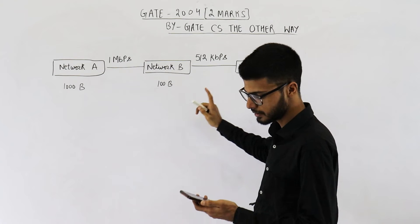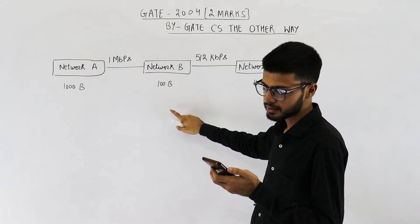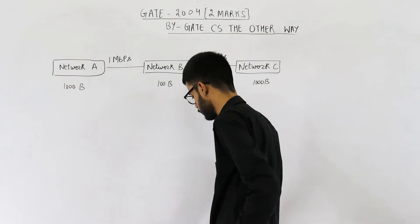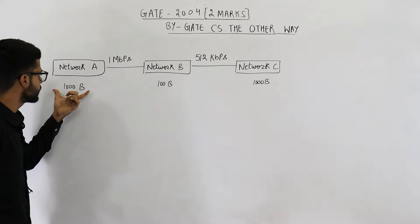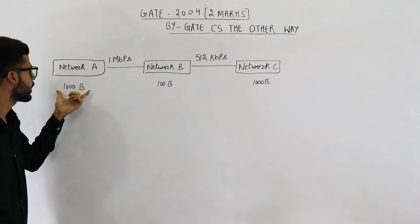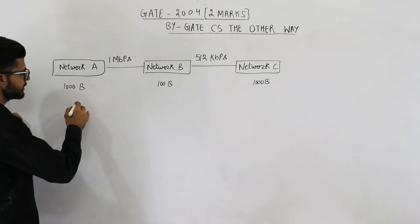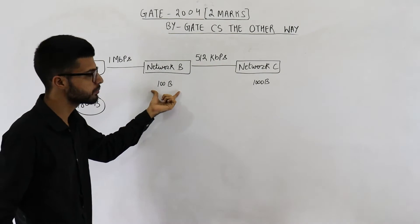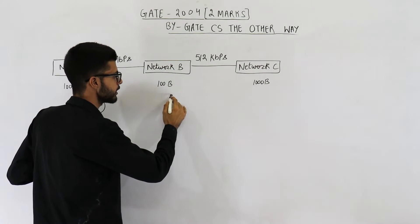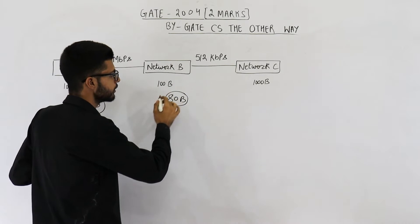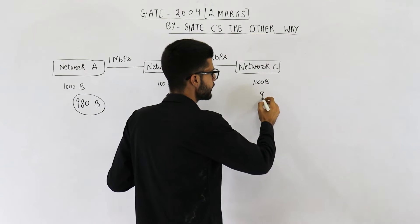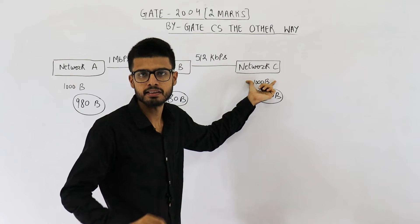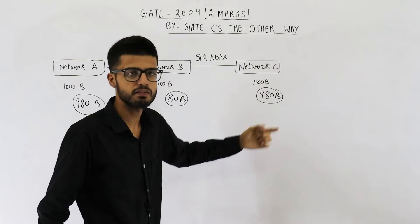Have a look here. The maximum packet size including 20 byte IP header is 1000 bytes for network A. So the largest packet possible is 1000 bytes including 20 bytes of header, meaning maximum data can be 980 bytes. For network B, maximum data at network layer will be 100 minus 20, that means 80 bytes. And for network C, it will again be 980 bytes, because we subtract the 20 bytes of header from the maximum limit.